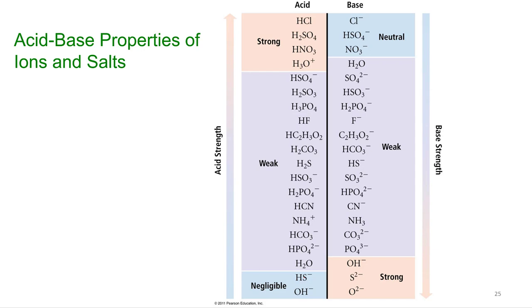So, as you can see, as the acid strength increases, here's our strong acids. HCl, H2SO4, nitric. Their anions that they will produce are neutral. They're not even basic compounds, or basic anions.